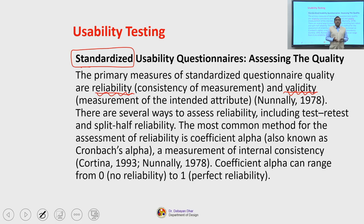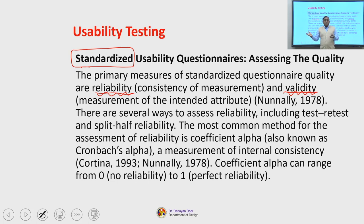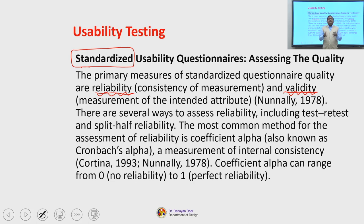If your instrument is not reliable, what will happen is that every time you conduct a test and use these questionnaires, it would not provide you with the same measure again and again. If the questionnaire is about measurement of perceived usability, at certain points it might measure perceived usability while in a different test or situation it might measure something else — that is what we call a reliability issue, and this is measured by Cronbach's Alpha.